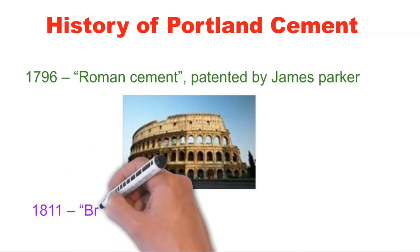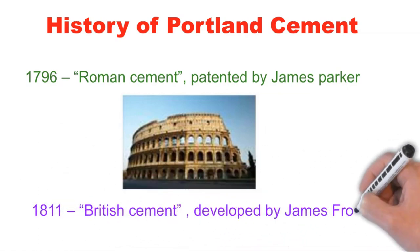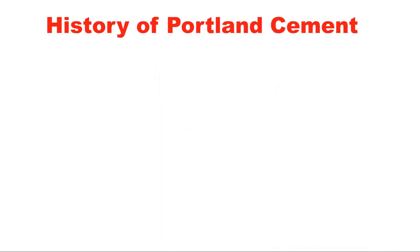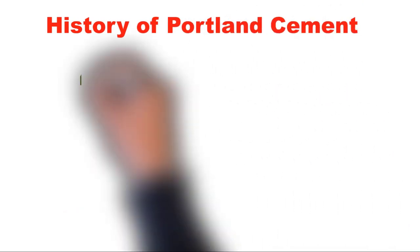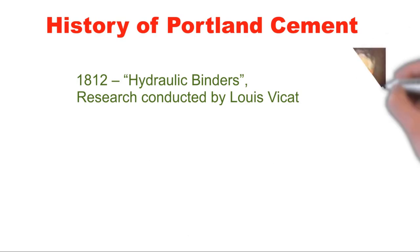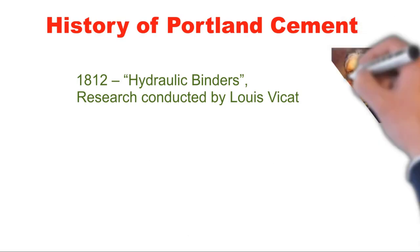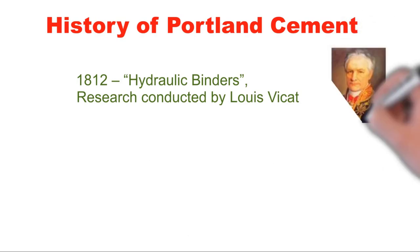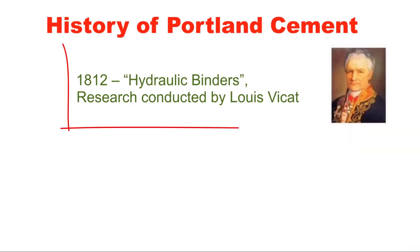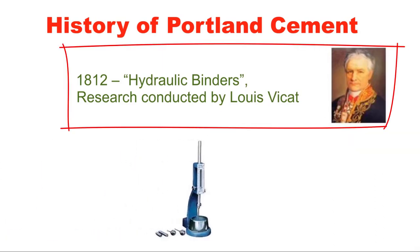In 1811, James Frost developed a cement called British cement. In 1812, the French national Louis Vicat conducted detailed research on various binders available at that point of time, particularly hydraulic binders, and he developed the apparatus for finding the setting time of cement, which is called the Vicat apparatus.